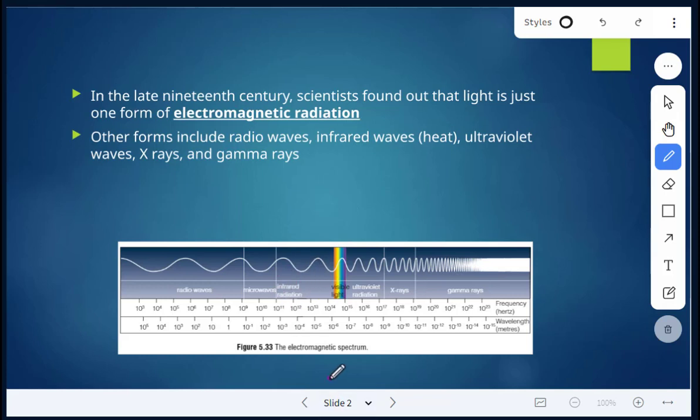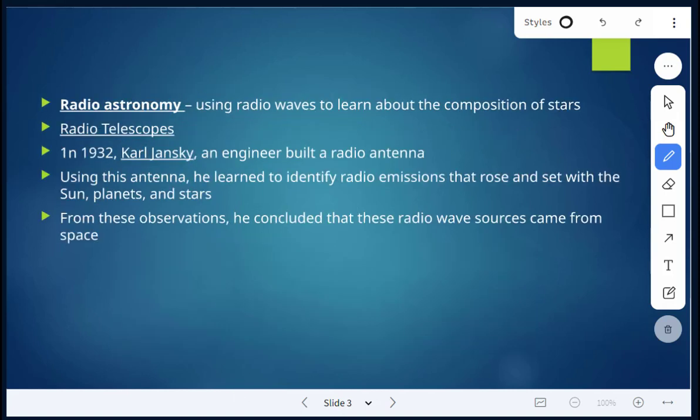All right, so we're going to focus on radio astronomy and radio telescopes today. Radio astronomy is using radio waves to learn more about the composition of stars. So we'll talk a little bit about radio telescopes. In 1932, we have this engineer Karl Jansky. He built a radio antenna.